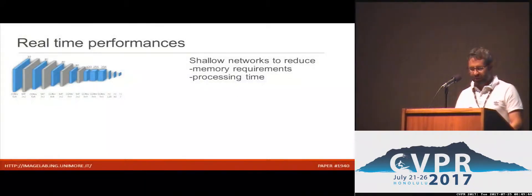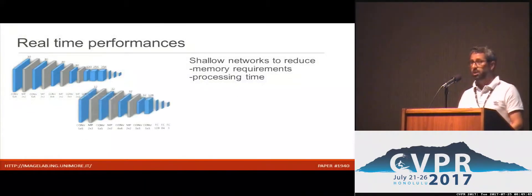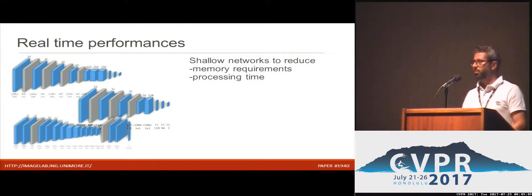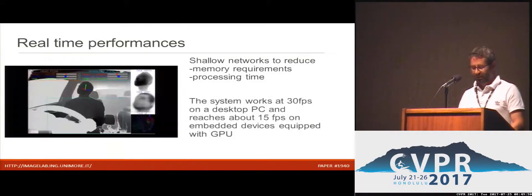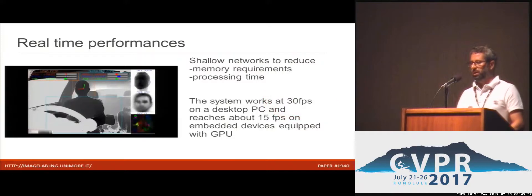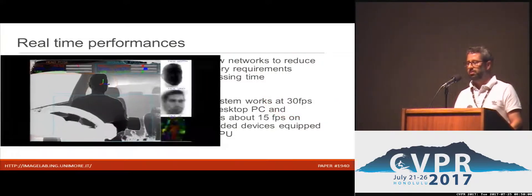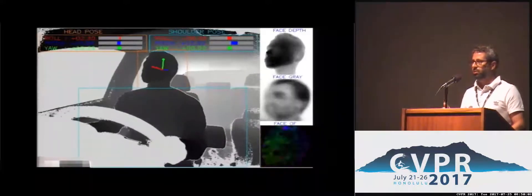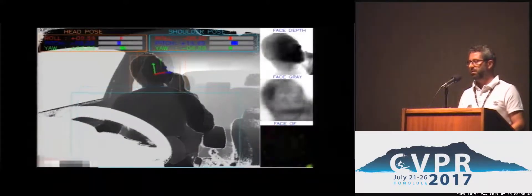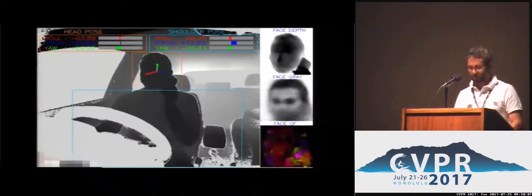The models of all the networks have been reduced as shallow as possible in order to meet real-time performance, also on embedded devices. The video currently running is showing the system output on a real in-car setup. On the left you can see the output of the system, and on the right, the three inputs of the networks: the face-on-depth, the face-gray, and the motion image.